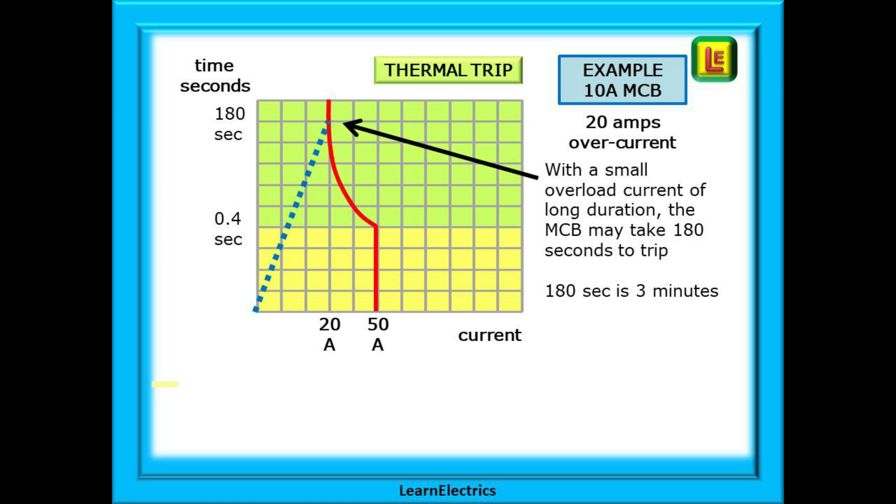20 amps flows through this 10 amp MCB. It's a small overload of long duration and begins to heat up the bimetallic strip.